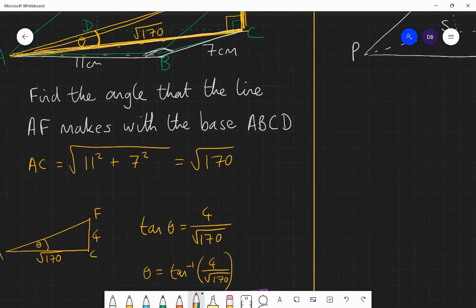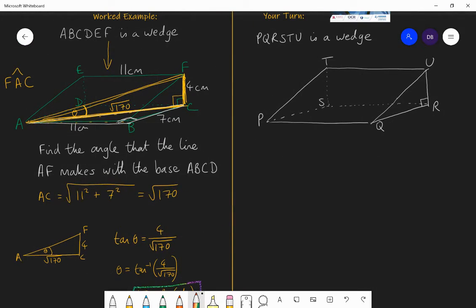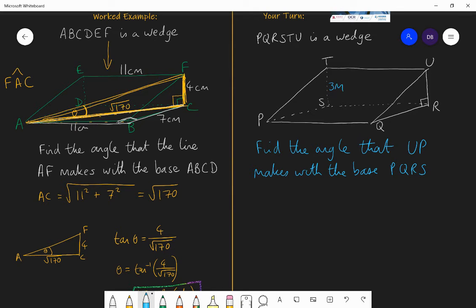Okay, so here's the question I want you to have a go at. Here is another wedge, P-Q-R-S-T-U. I want you to find the angle that UP makes with the base P-Q-R-S. And the lengths that are on this wedge are: it is three meters tall, it is eight meters along this side P-Q, and it is five meters along the side from P to S. So three meters, five meters, and eight meters. Those are the dimensional qualities of that wedge. So using that, pause this video now and find the answer to this question.